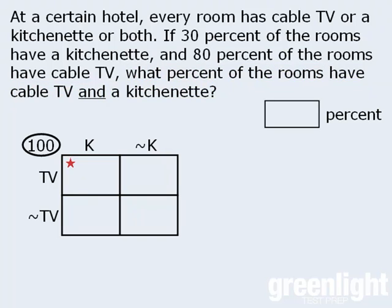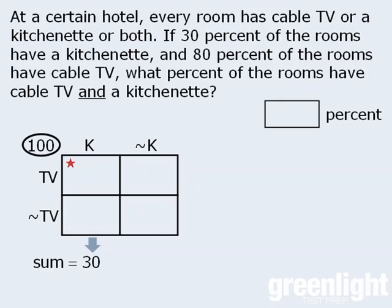Now let's see what information we can add to our diagram. The question tells us that 30% of the rooms have a kitchenette, so the sum of these two boxes must be 30% of 100, which is 30. Since there are 100 hotel rooms altogether and 30 of them have a kitchenette, the remaining 70 rooms must not have a kitchenette, so the sum of these two boxes must be 70.